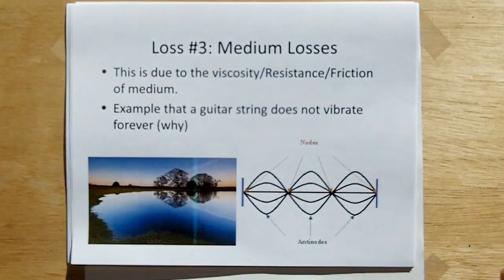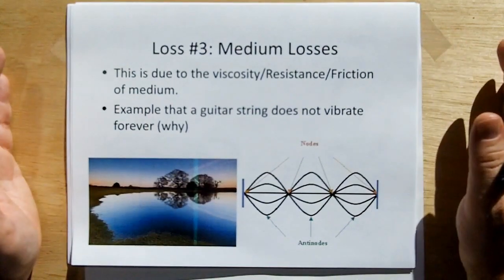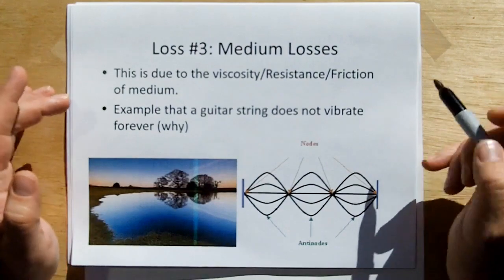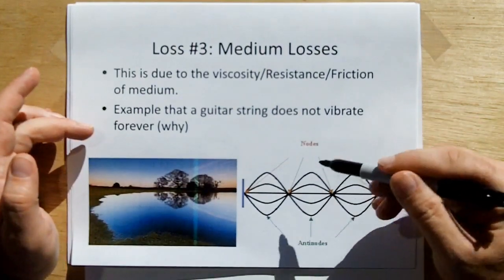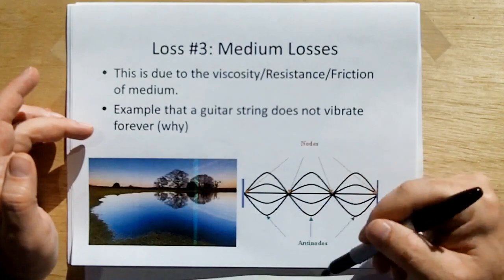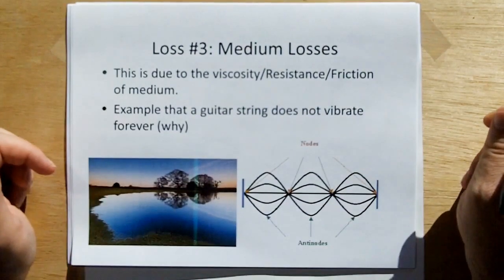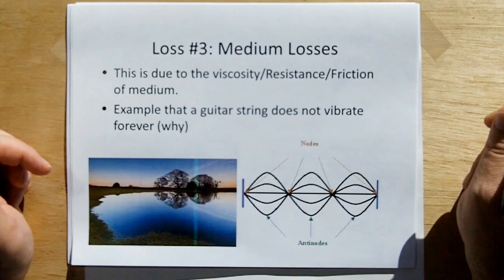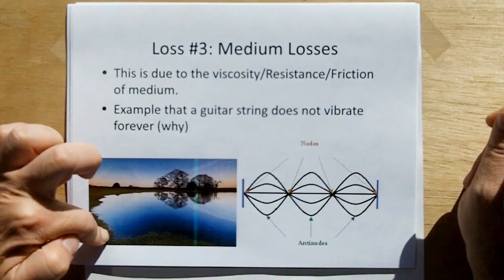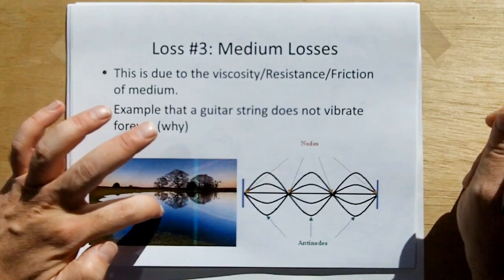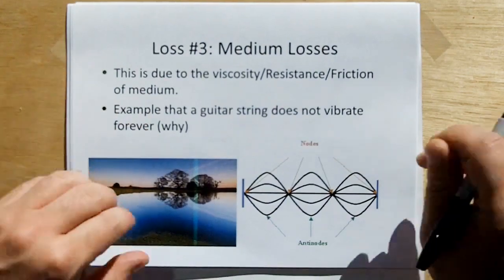Loss number three are medium losses. This is due to the viscosity, resistance, or friction of a medium. For example, a guitar string doesn't vibrate forever because it's vibrating in air. It's losing energy through friction of the air. You look at the pond. Eventually, all of the surface ripples of a pond will eventually go away. Part of it is breaking on the shore, but another part of it is the fact that the medium is viscous and has frictional losses, and it's going to convert the energy to heat.